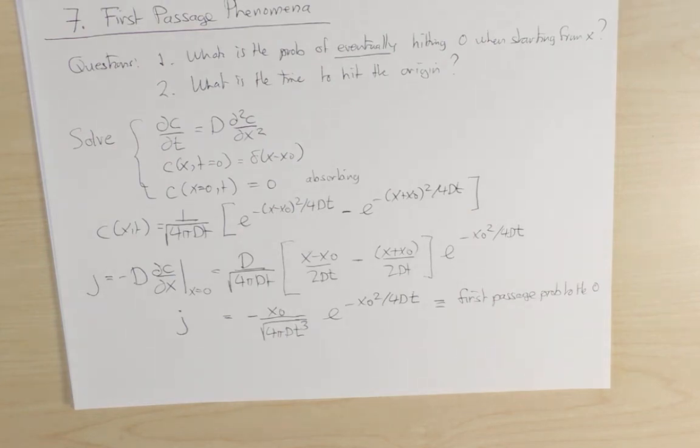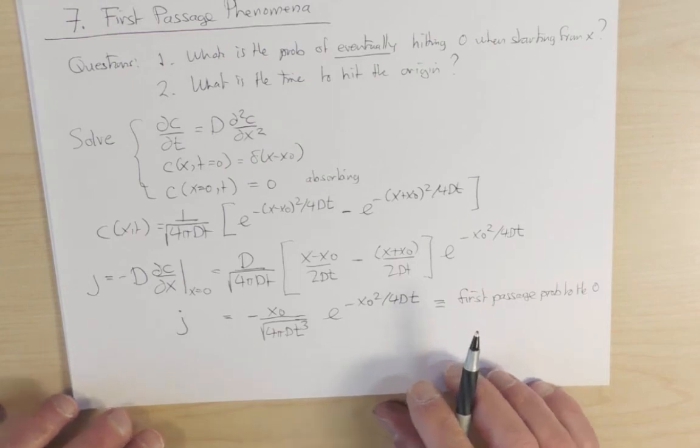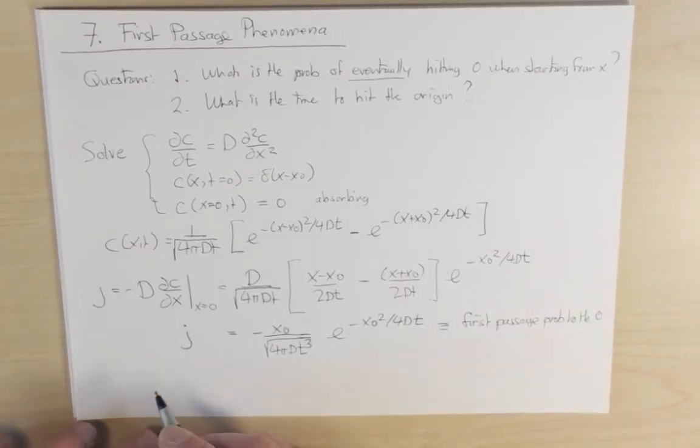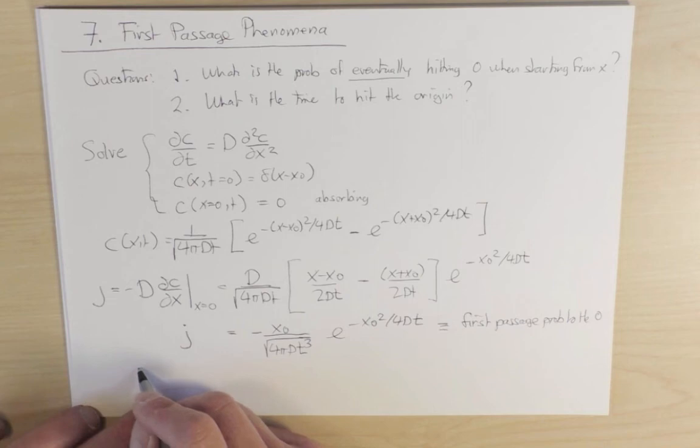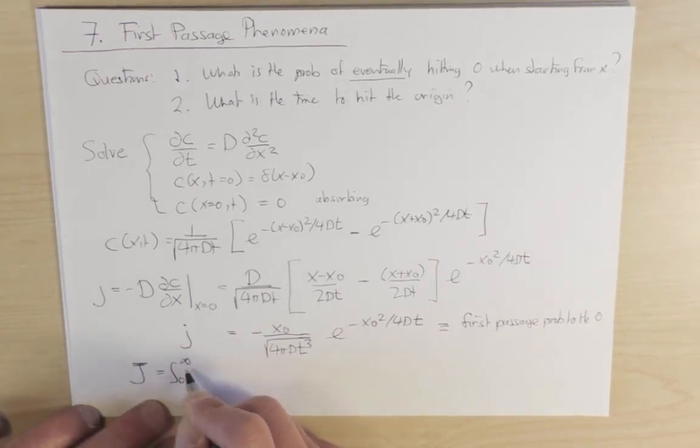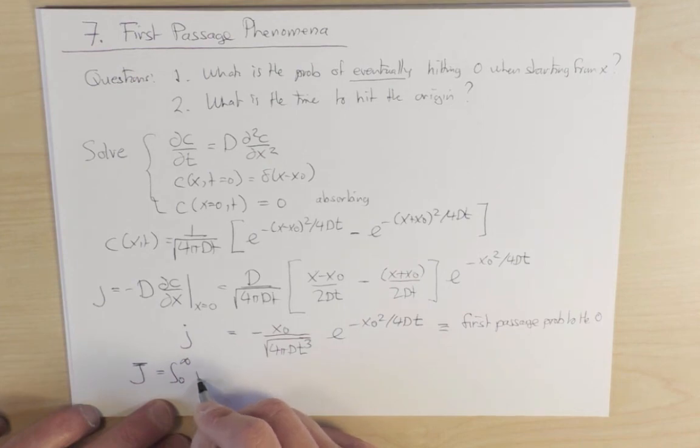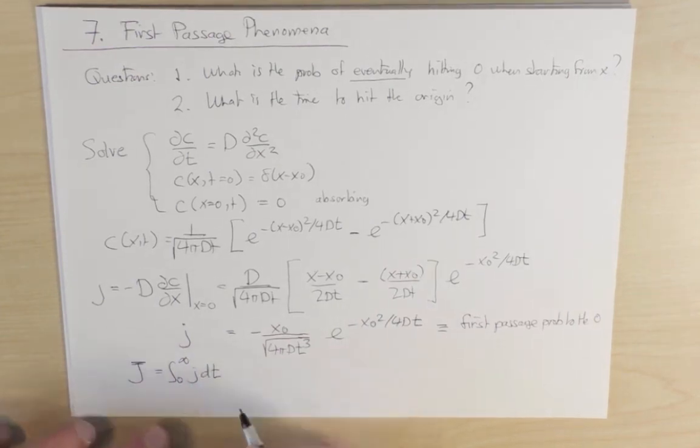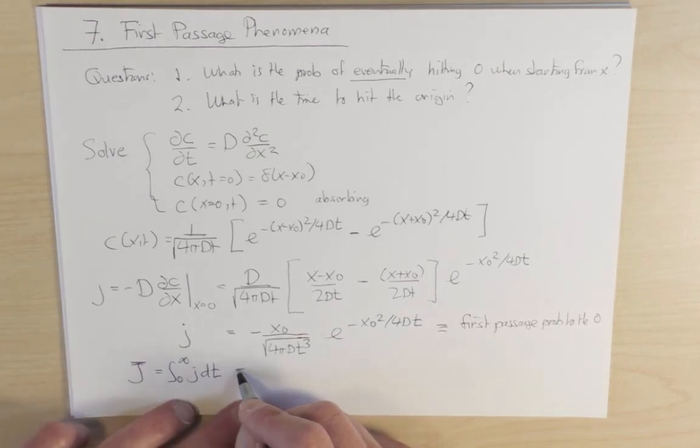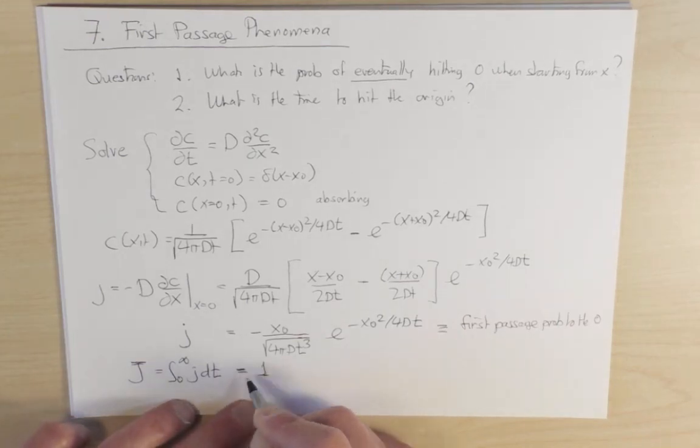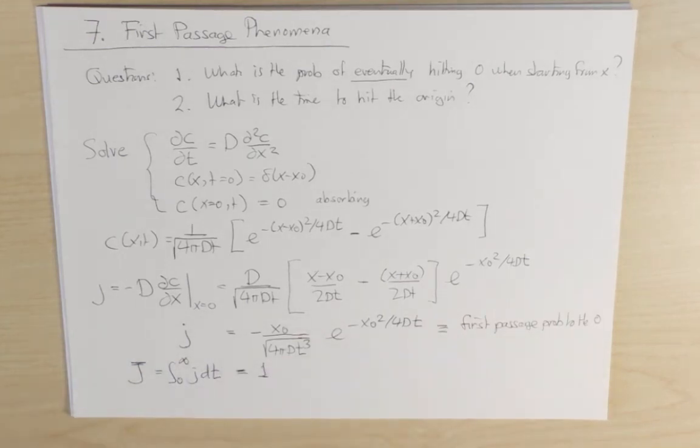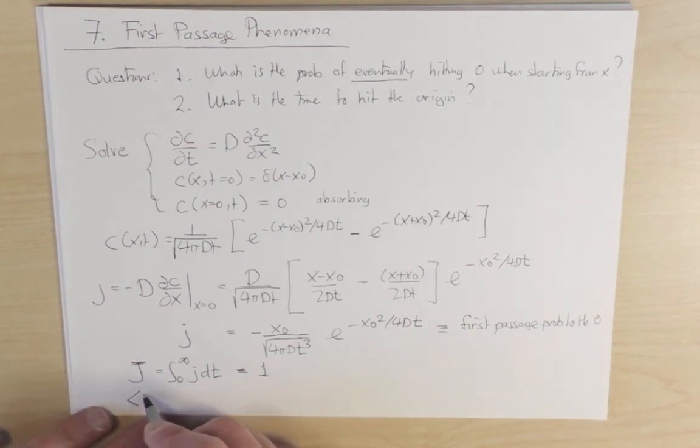And now come two fundamental consequences of this simple expression. First of all, we can compute what I'll call capital J, which is the integral from zero to infinity of little j dt. So this is the probability that I come to the origin at any time. And I'll leave this as an exercise for the student. When you compute this integration, it's exactly equal to 1. So we are sure that we will hit the origin.